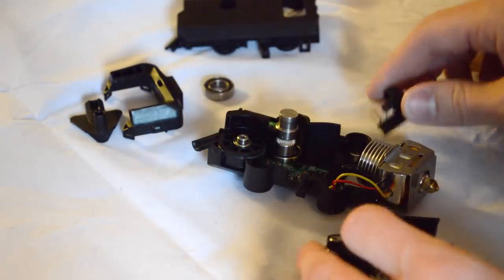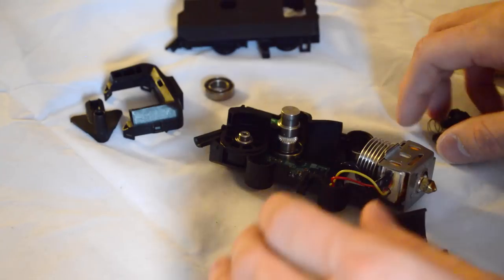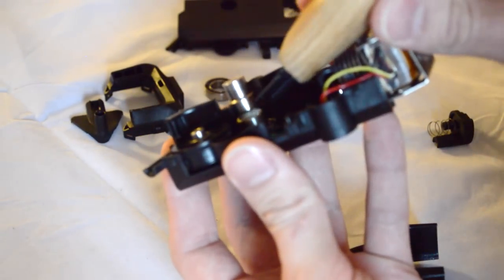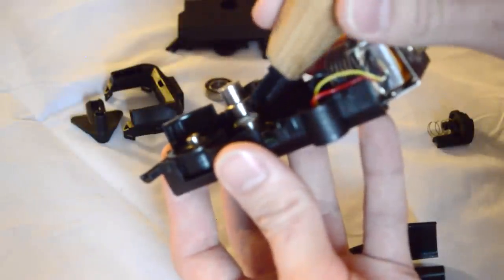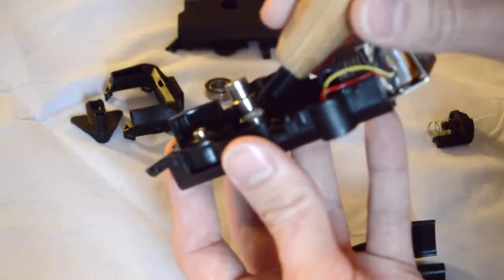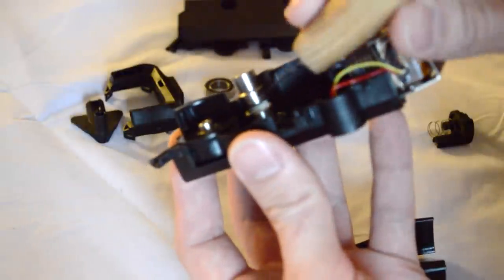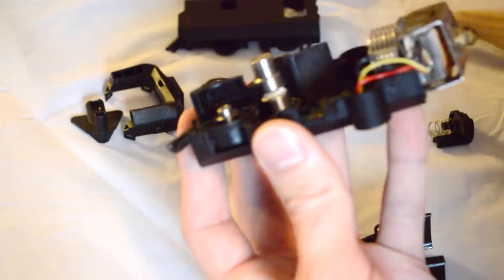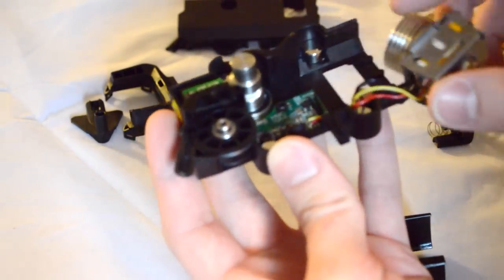Reassembly is fairly straightforward once you're inside here. While you're in here, it's probably not a bad idea to clean out the hobbed bolt. That's this thing right here. You can see all these ground up bits of plastic. That'll prevent it from extruding efficiently. So if you have something small, like a small thin exacto knife, you can kind of get in there and clean it up a little bit. If not, it's not a huge deal.